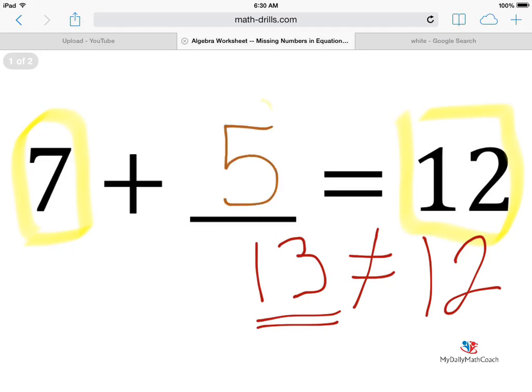7 plus 5. And lo and behold, 7 plus 5 does equal 12. So 12 equals 12, and there is your answer.